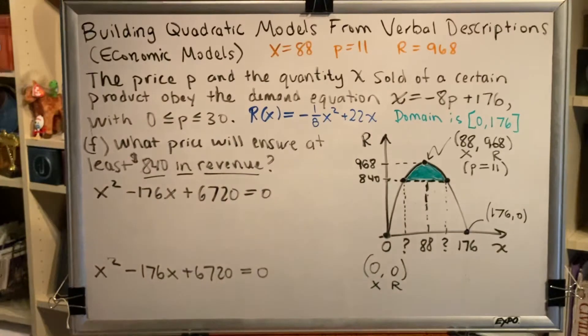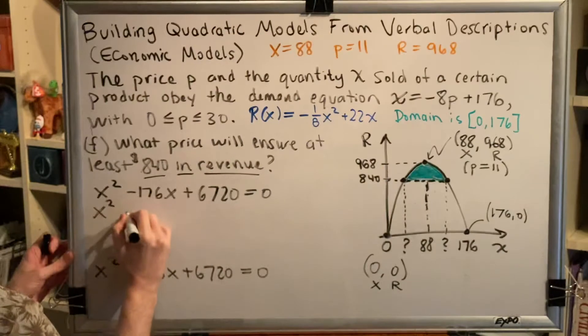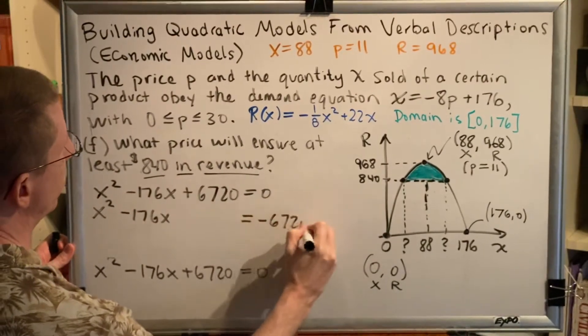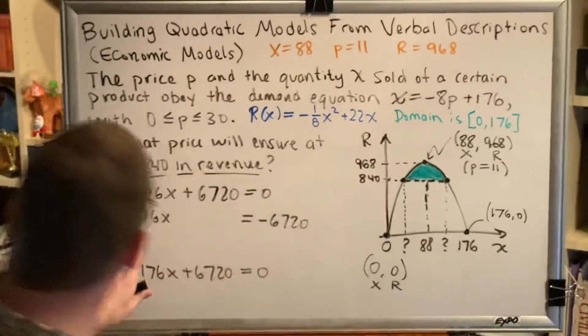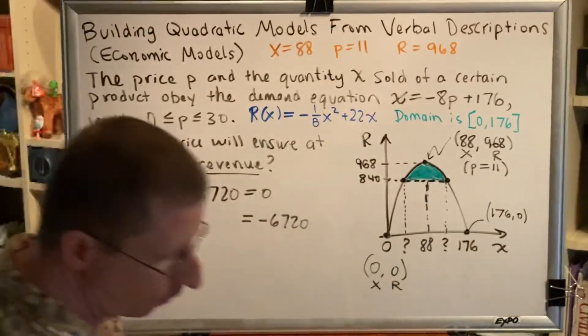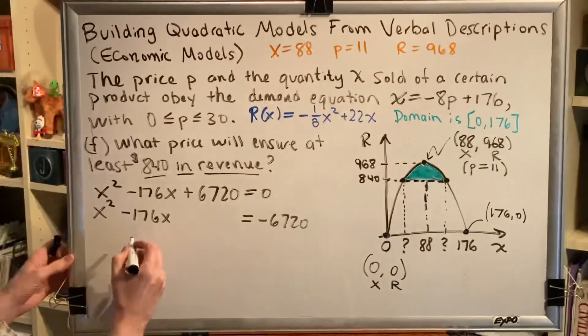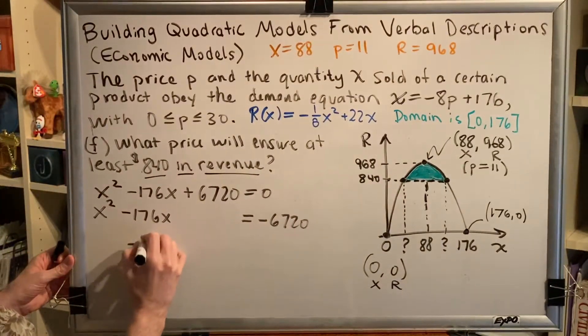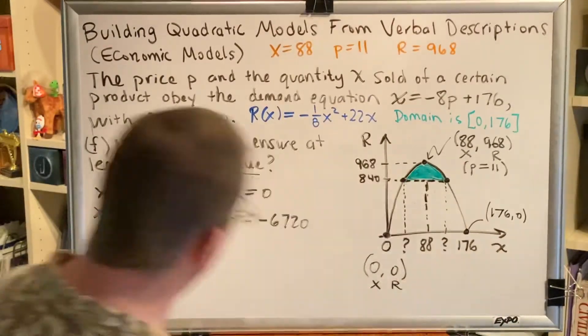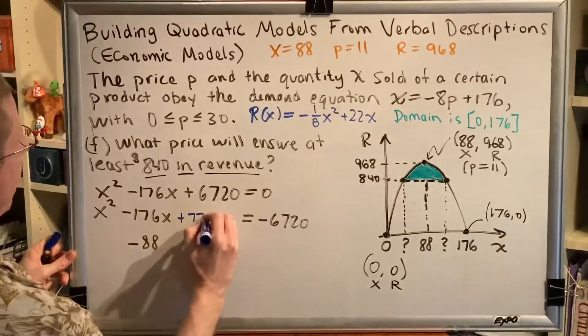When we discussed circles, we learned a process called completing the square. We're going to complete the square right now for this particular quadratic equation. Completing the square works like this. First, take your constant term and move it to the other side. So we have x² - 176x = -6720. The next step is to take your middle term coefficient and cut it in half. So what is half of -176? Well, that would be -88. And we write that down here beneath, -88. Now, square it. -88² is 7744. And add that value to both sides.